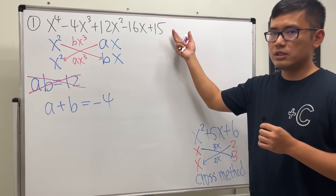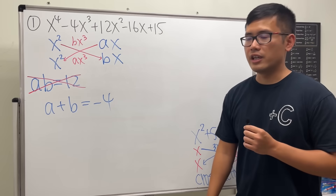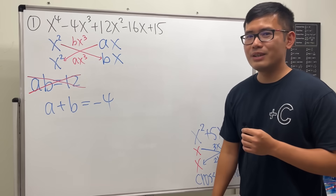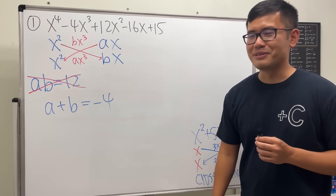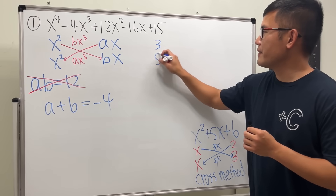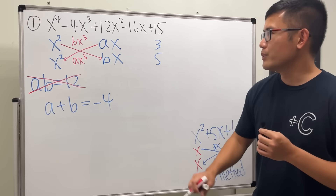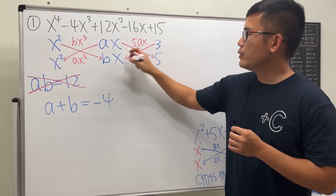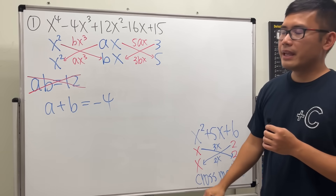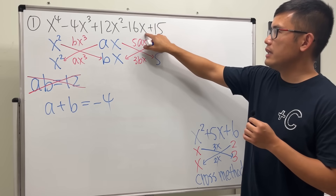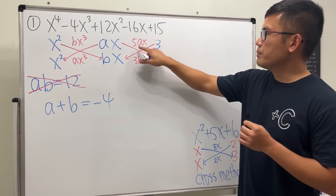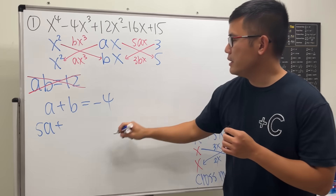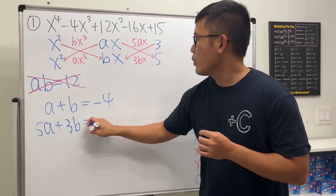Now let's look at the constant term, which is 15. We guess and check: let's try 3 times 5. So we put 3 and 5 in the constant positions. Cross-multiplying gives 5ax and 3bx — these are the only two ways to produce the x term — so we must have 5a plus 3b equal to negative 16.